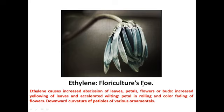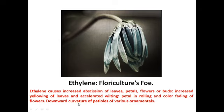Ethylene is also called floriculture's foe, or floriculture's enemy. Why? Because ethylene increases the abscission of leaves, making leaves, petals, flowers, or buds fall down. If a flower is externally given a dose of ethylene, the petals and leaves first turn yellow and then fall off. It also induces aging or senescence and the downward curvature of petals of various ornamental plants.